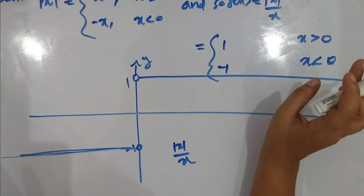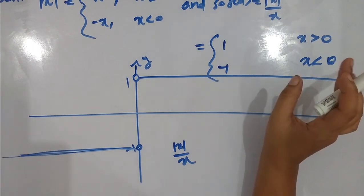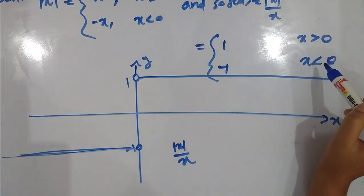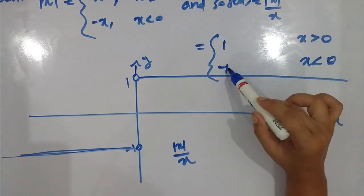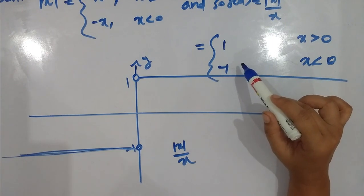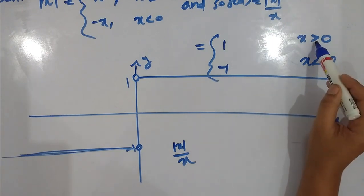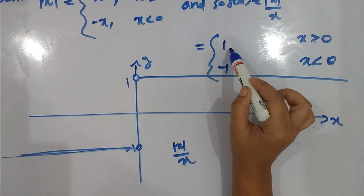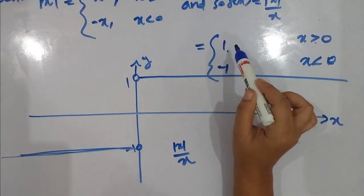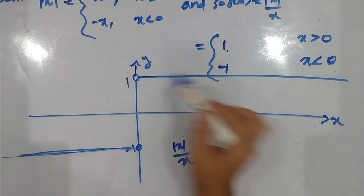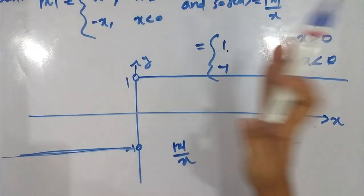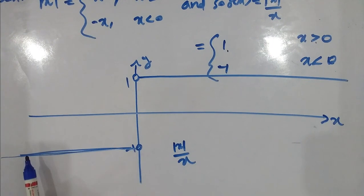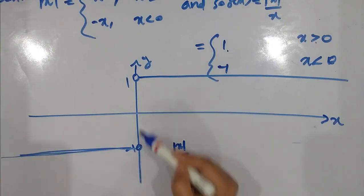For any real number x less than 0, f(x) is −1. For any real number x greater than 0, f(x) is 1. Therefore the right-side limit is 1 and the left-side limit is −1.